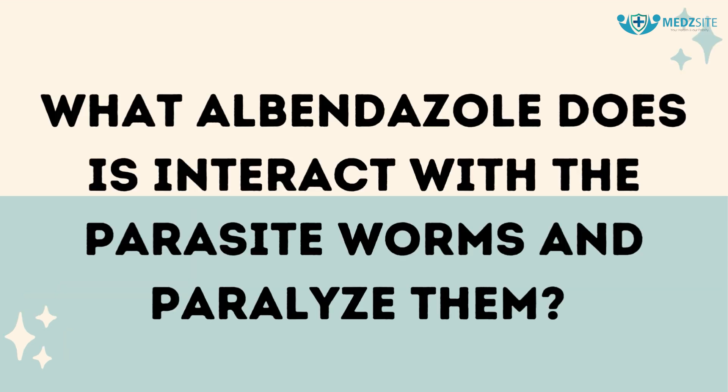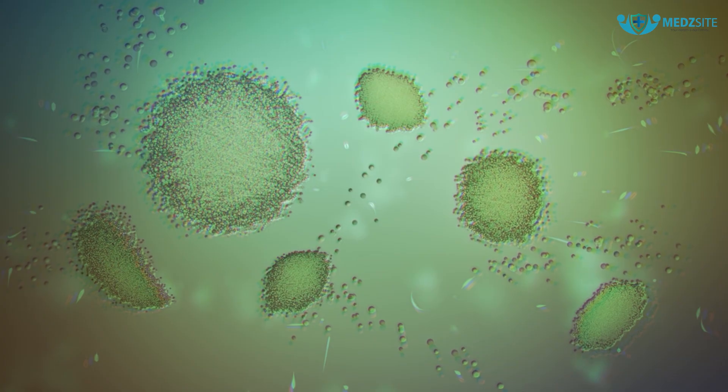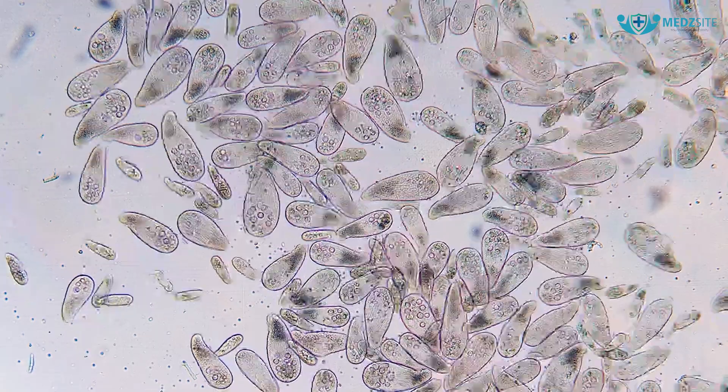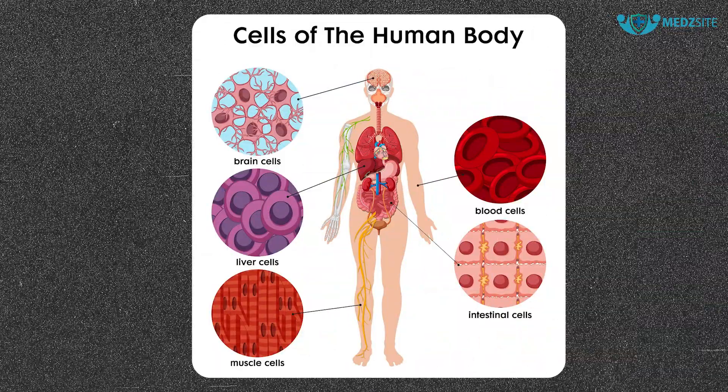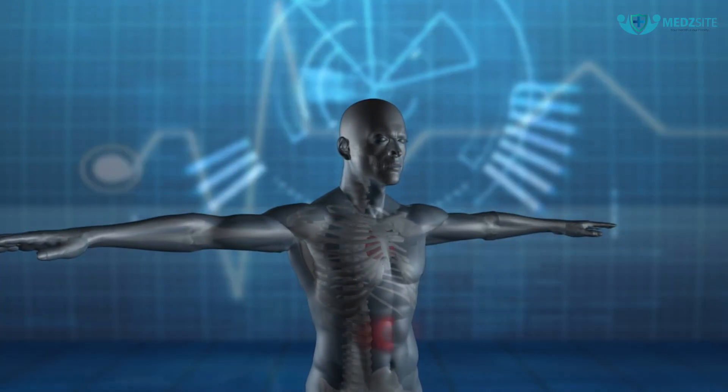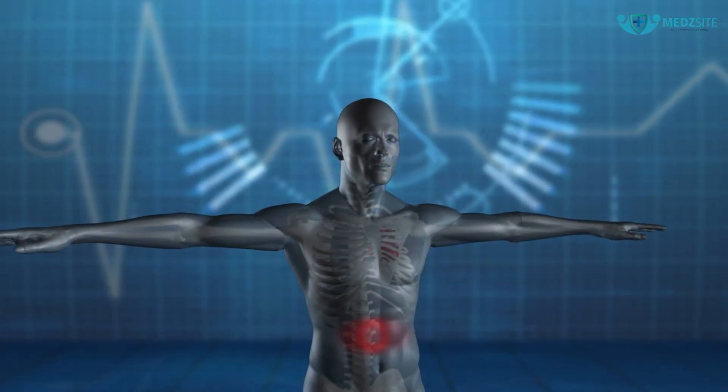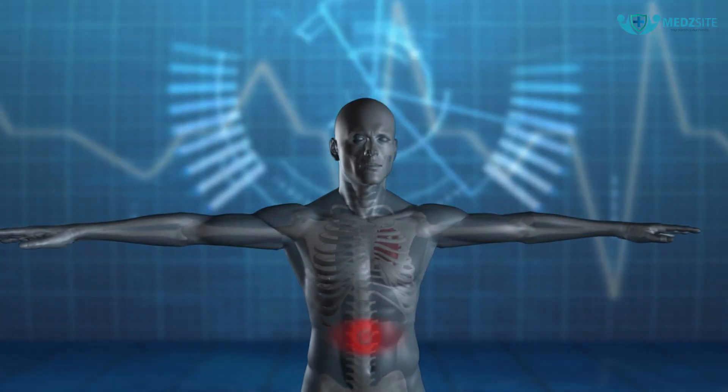How to use albendazole and how does it work? What albendazole does is interact with the parasite worms and paralyze them. This way, the activity of parasites — such as multiplying or destroying human cells — stops. After that, the medicine kills them and the body part starts recovering from the infected condition.